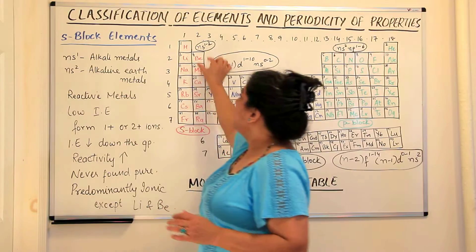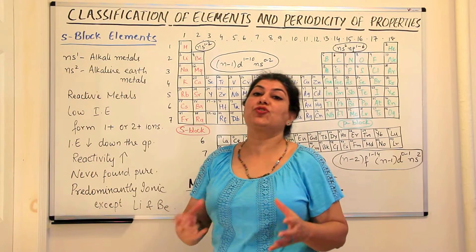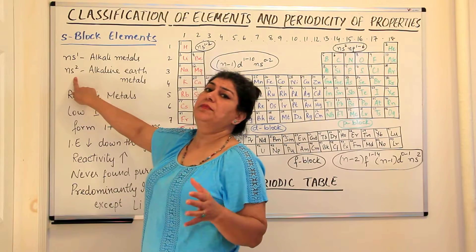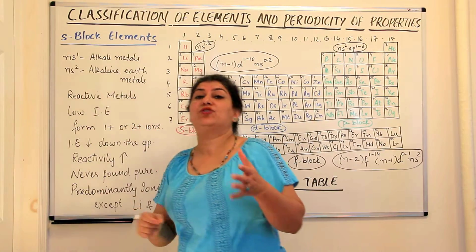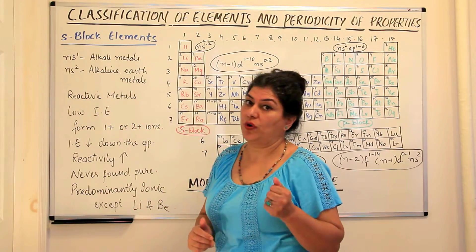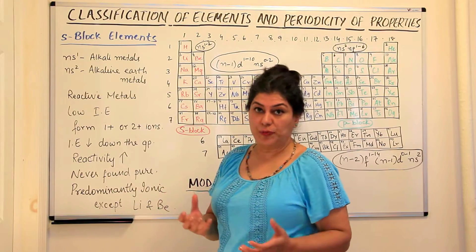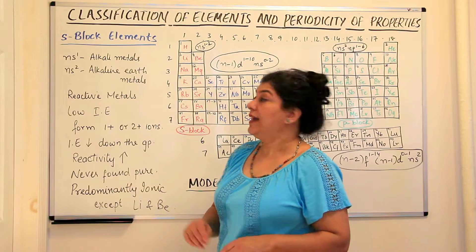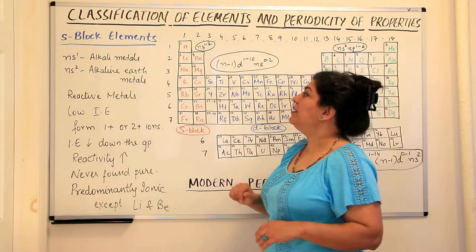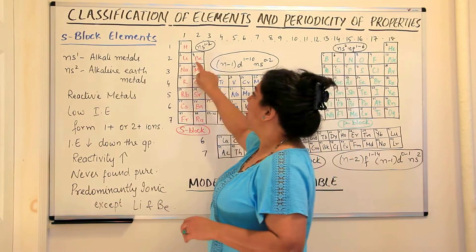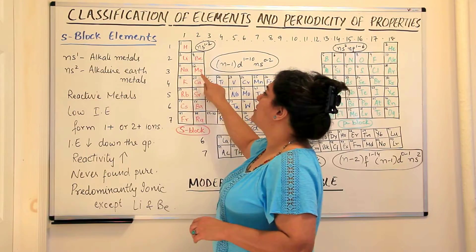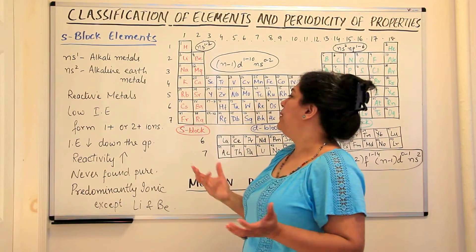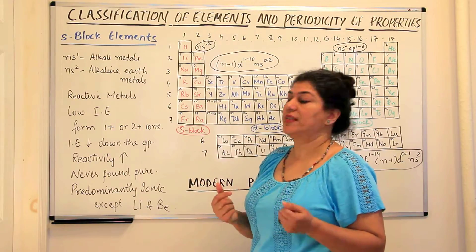Similarly, for the alkaline earth metals the general electronic configuration is written as ns2. These are elements which have two electrons in the outermost s orbital, where n stands for the principal quantum number. Beryllium has a configuration of 2s2, magnesium 3s2, calcium 4s2, strontium 5s2, barium 6s2, and radium 7s2.